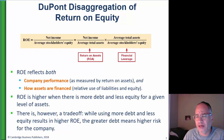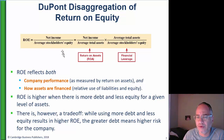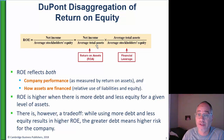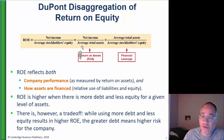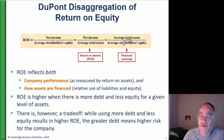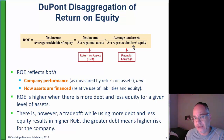In the traditional DuPont analysis, we can take return on equity and break it into two components: return on assets — that's net income divided by average total assets, as we saw in a previous chapter — multiplied by average total assets divided by average stockholders' equity, which is a measure of financial leverage. Return on assets is all about company performance, whereas financial leverage is about how levered the company is and how much debt it has outstanding.